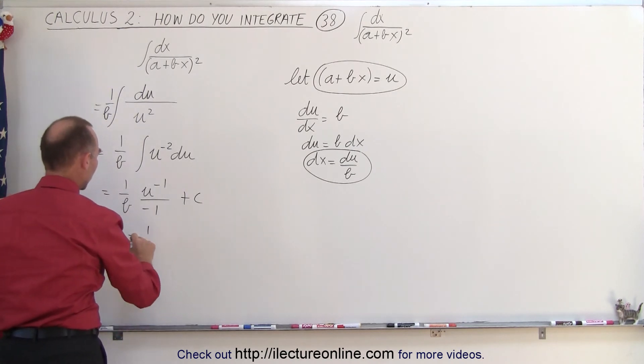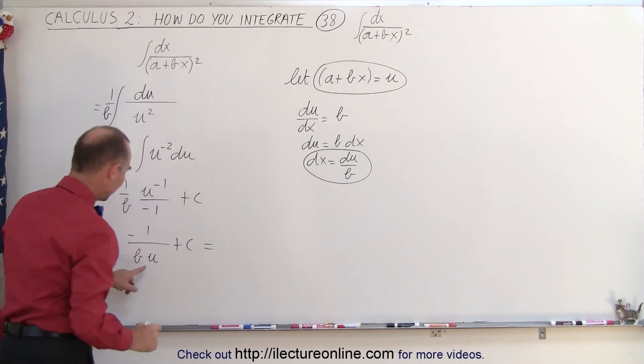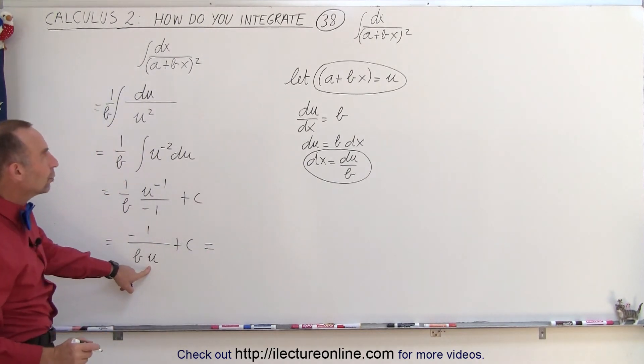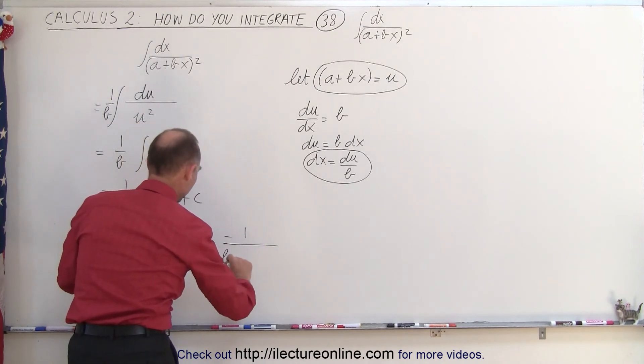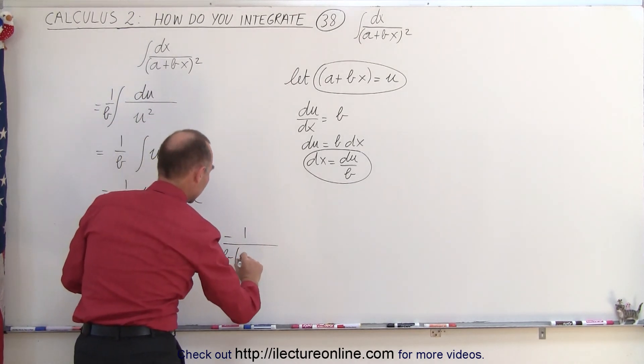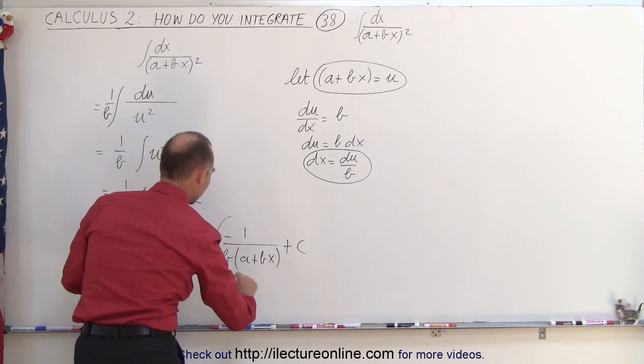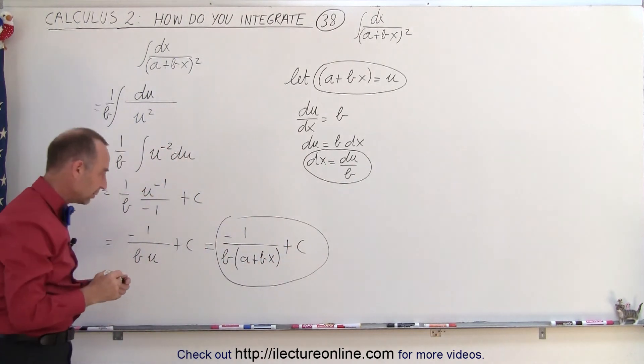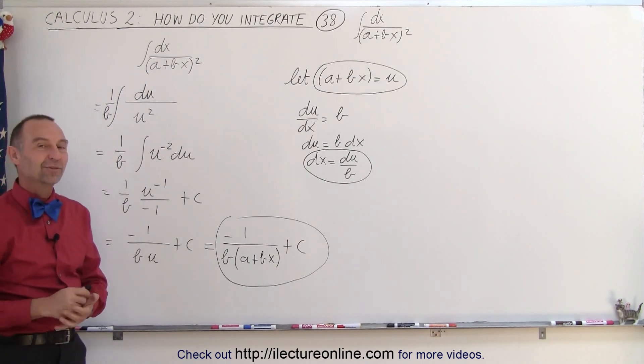Which is equal to minus 1 over b times u plus c, and then if we substitute back in what u is equal to, then this becomes minus 1 over b times a plus bx, and then a constant of integration. And there you go. That's the result of that integral, and that's how it's done.